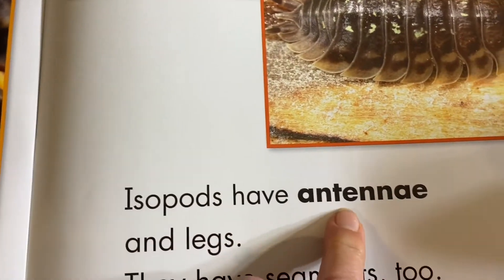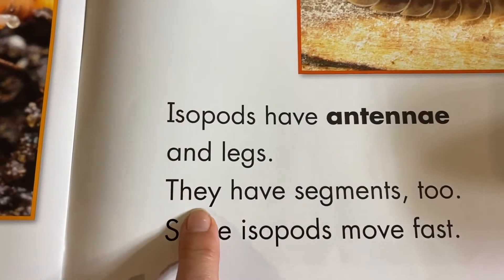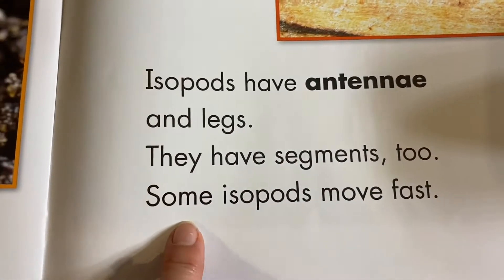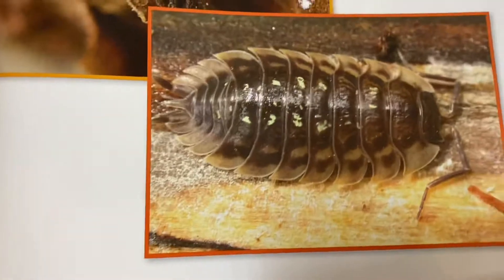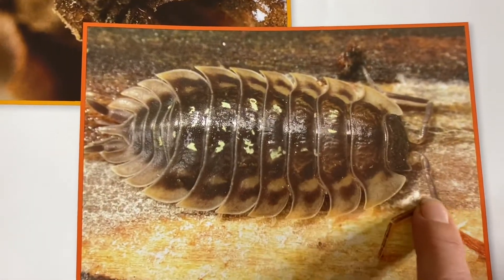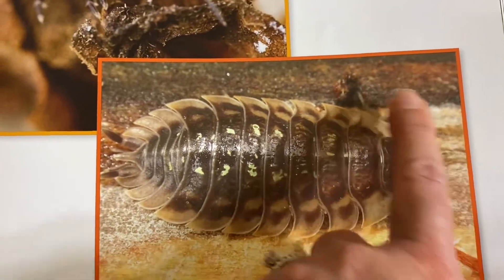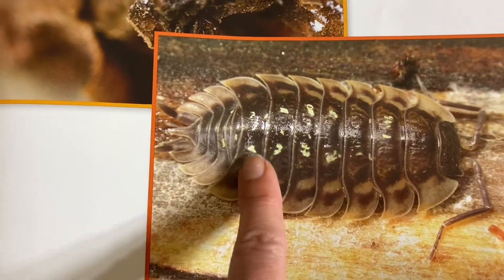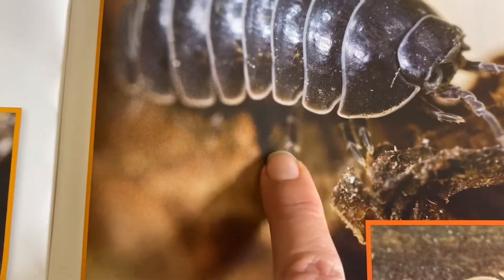Isopods have antennae and legs. They have segments too. Some isopods move fast. So let's look — there you can see the antennae right there. Here are the segments of the isopod, and in this picture you can see the legs of the isopod.